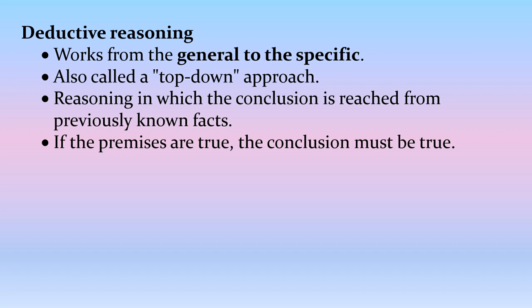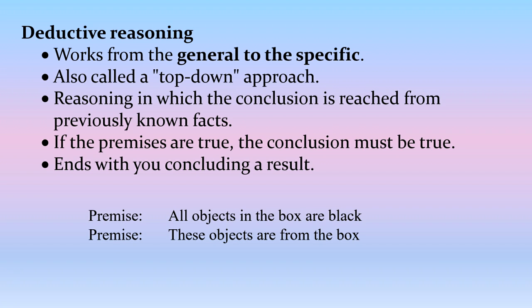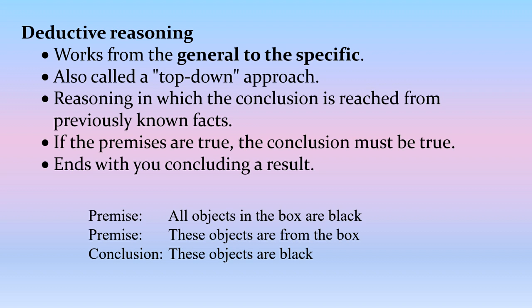But if your premises are false, then the conclusion is not going to be true. Here's an example: one premise — all of the objects I have in this box sitting in my lap are black. I've got a box on my lap and every object in it is black. Another premise — I've just pulled three objects out of the box. If all the objects in the box are black and I've pulled three objects from the box, then we can logically conclude these objects are black.